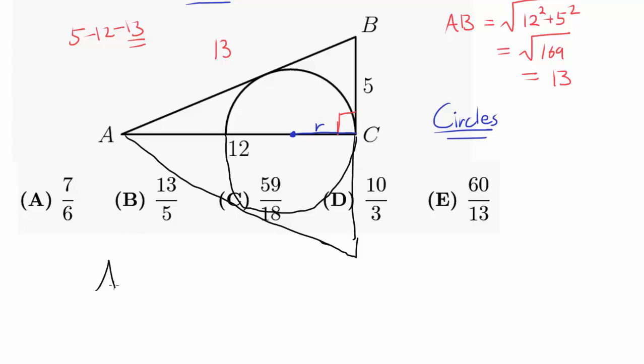You may remember that area of a triangle equals the inradius times the semi-perimeter. Let me make sure - inradius times semi-perimeter.